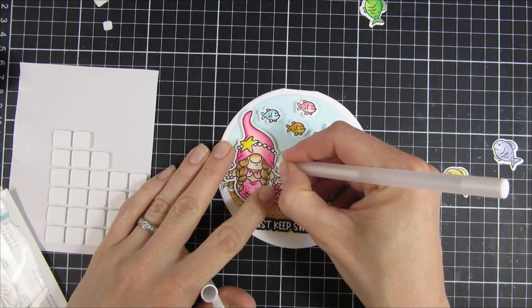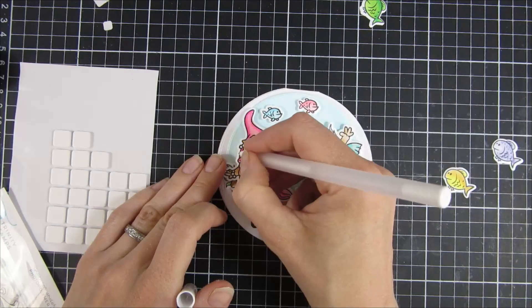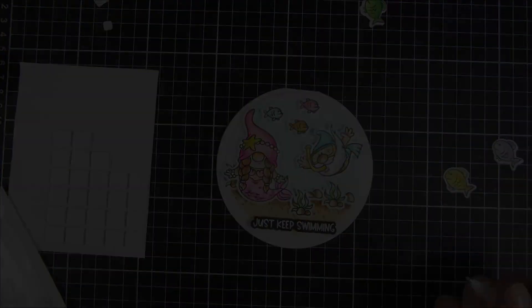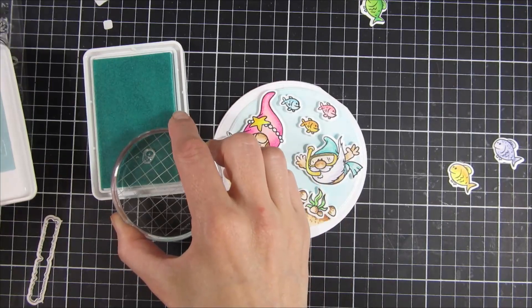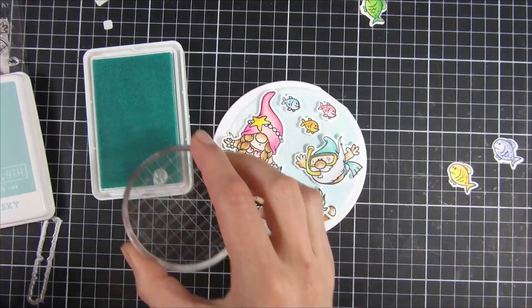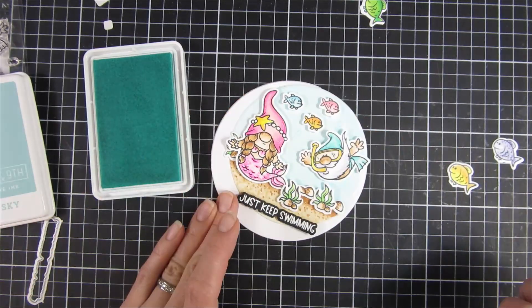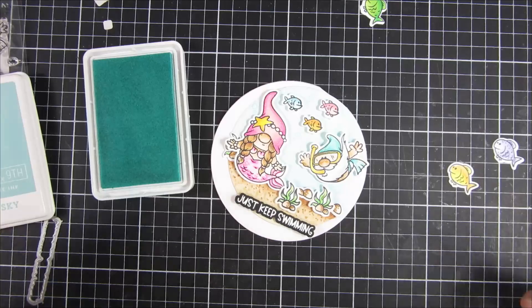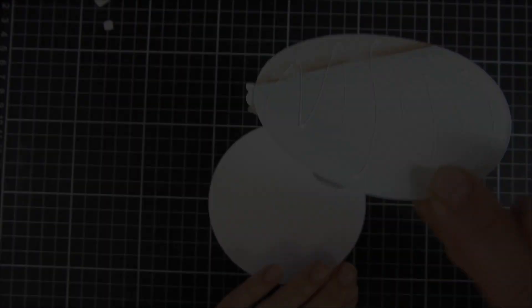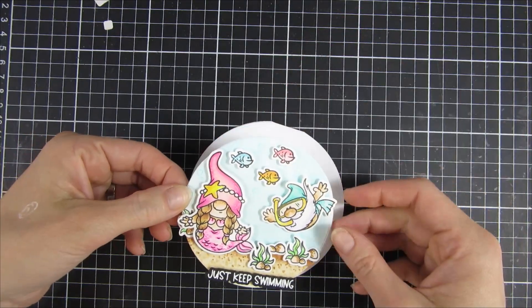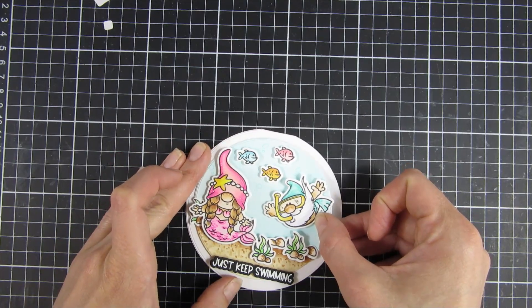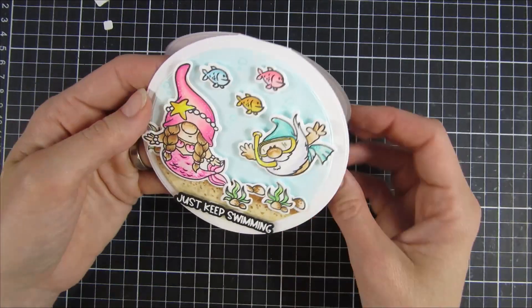I also went in with a white gel pen when I was happy with all of the placement and created some dots to look like the sun hitting the mermaids. Also, if I had any boo-boos that I made when I colored, I could cover them up with that white gel pen. It's a really handy tool. Then I will attach my circle down to our card base that I also cut with some heavy cardstock.